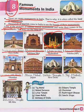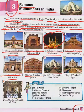Our sixth monument is Hawa Mahal. The spelling is H-A-W-A, Hawa, M-A-H-A-L, Mahal — Hawa Mahal. Hawa Mahal is located in Jaipur.